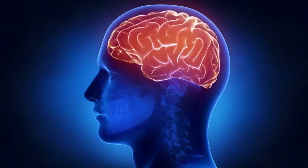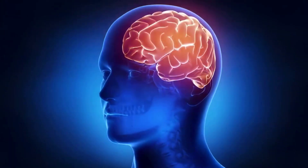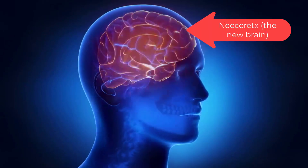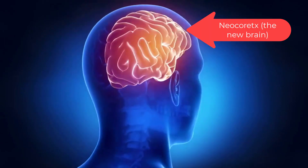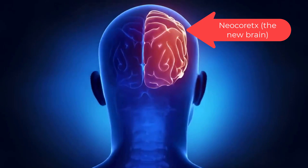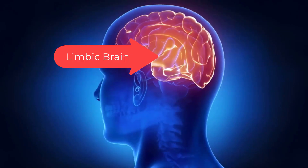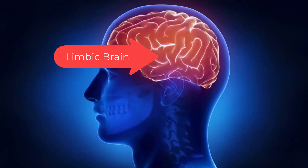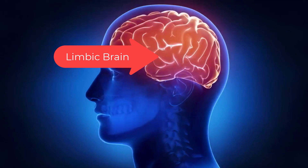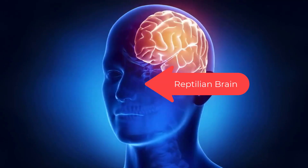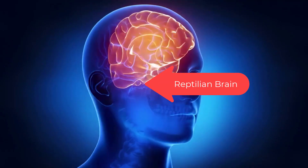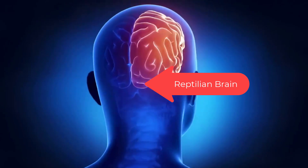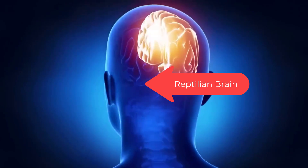Your brain has three basic layers and only one real decision maker. The new brain — the neocortex — thinks and processes rational data. The middle brain — the limbic brain — feels emotions and governs our instinct for fight or flight response. The old brain — the reptilian brain — it decides.